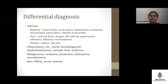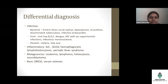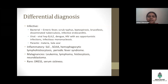For inflammatory causes, we have systemic lupus erythematosus, SOJIA (systemic onset juvenile idiopathic arthritis), hemophagocytic lymphohistiocytosis, and periodic fever syndrome. You can remember at least SLE and SOJIA. For malignancies, it is mostly leukemia, lymphoma, and neuroblastoma. Rare causes include serum sickness.